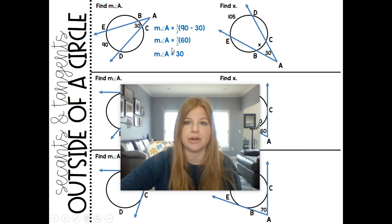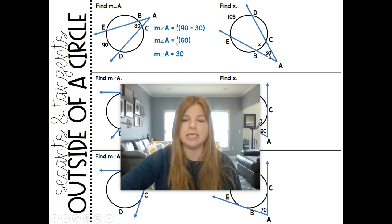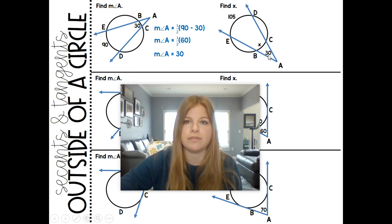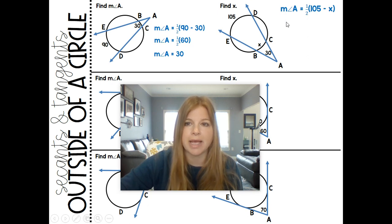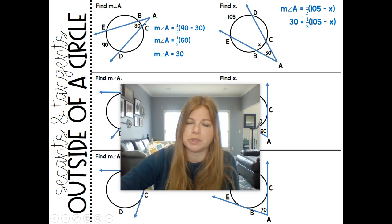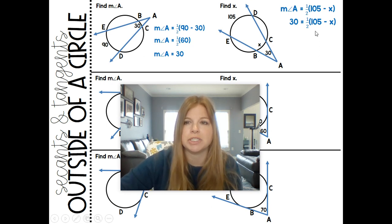Over here now, if I wanted to find x. Now x isn't that outer angle. We already know the outer angle, so we just have to make sure we put our numbers in the right spots. So 30 is equal to one half of 105 minus x. Think about that. The measure of angle A, which is 30, is equal to one half times the outer arc minus the inner arc. Just like we did here where we were solving for that angle, but here we're actually given the angle and we want to solve for an arc.